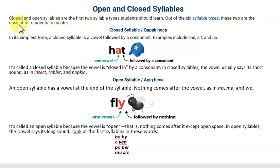Açıq və qapalı heca növləri ilk öyrənməli olduğu heca növləridir. Gəlin bunları aydın öyrənək. Closed syllable - qapalı heca. In its simplest form, a closed syllable is a vowel followed by a consonant.